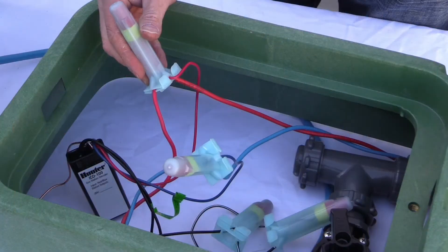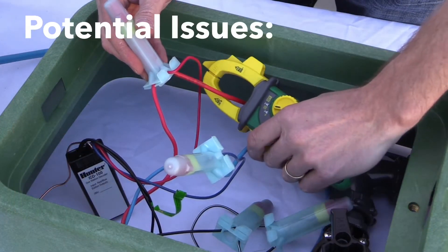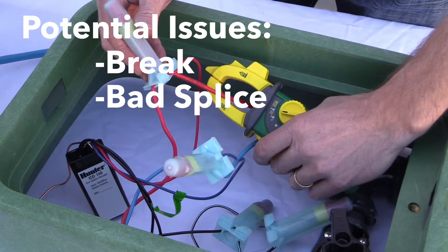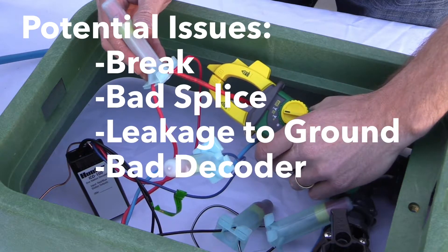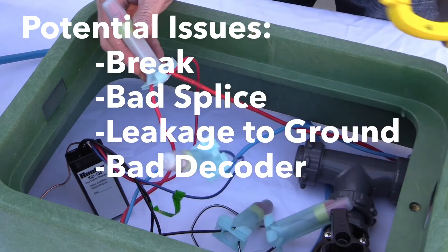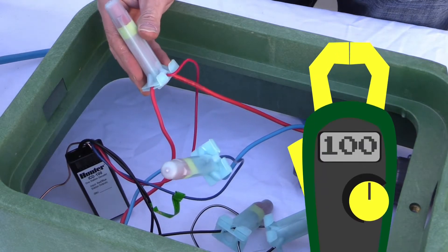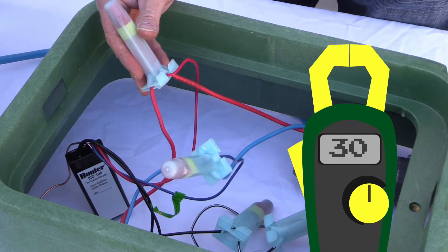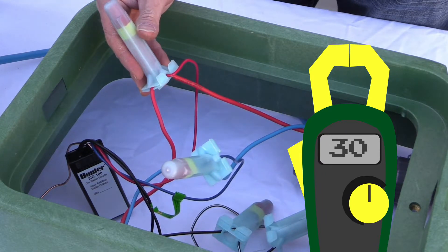If there's a change in this logical progression, you know there's an issue like a break, a bad splice, leakage to ground, or a bad decoder. For example, if your design is meant to draw 100 mA and you read only 30 at the controller, that means 70 of your decoders have been cut off from the system.